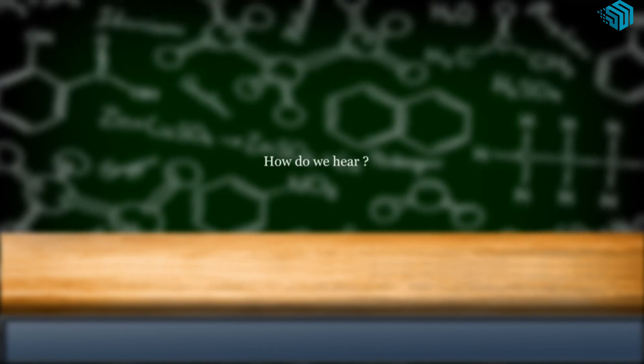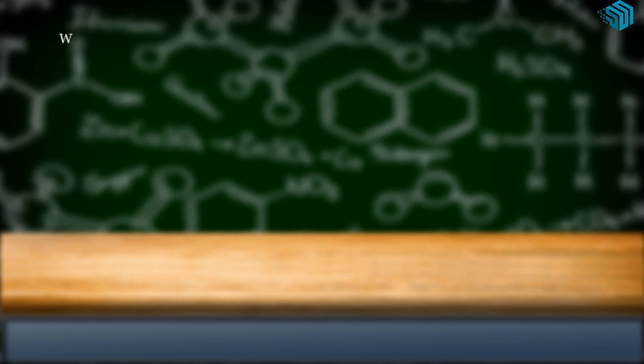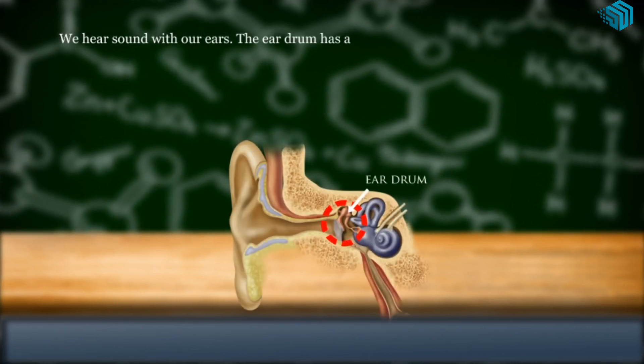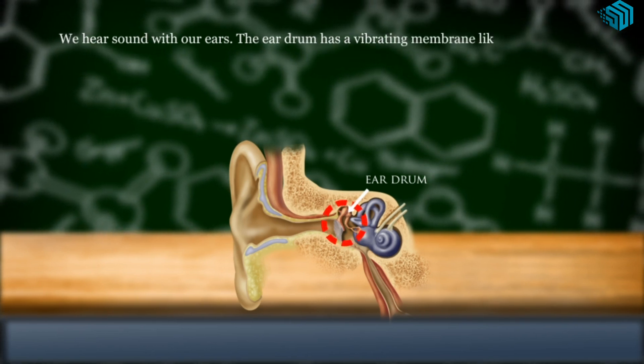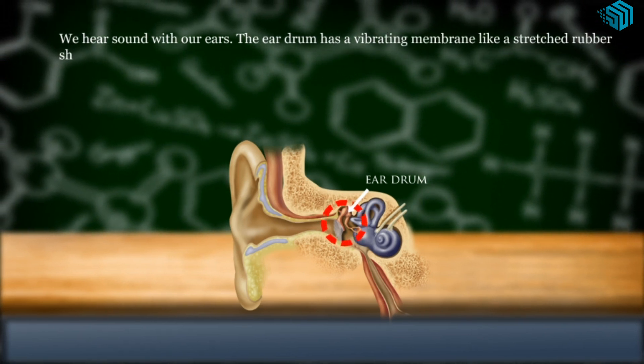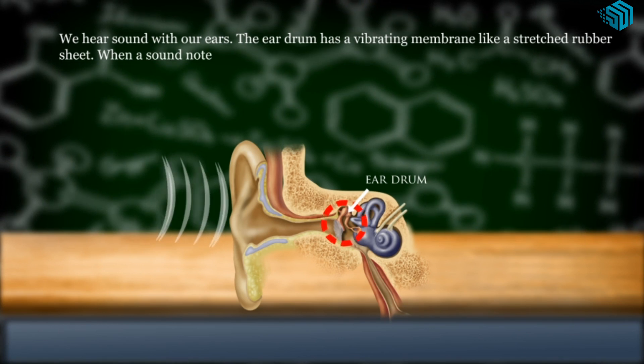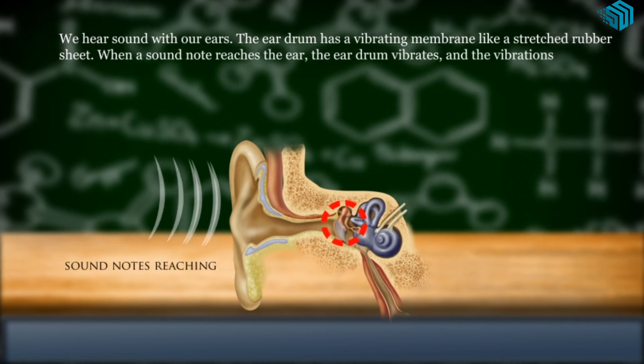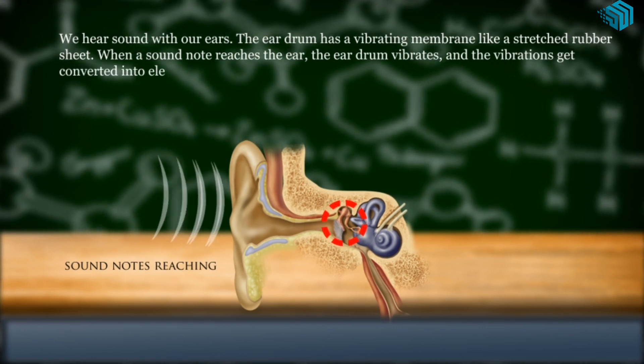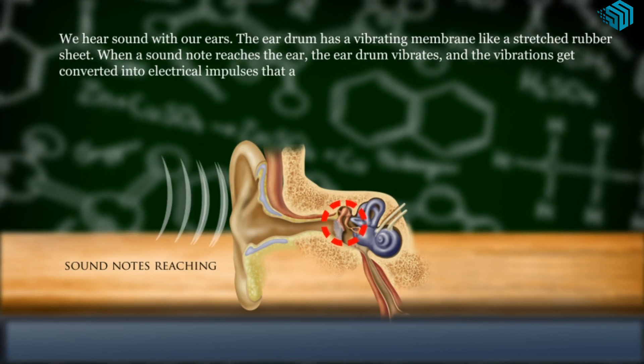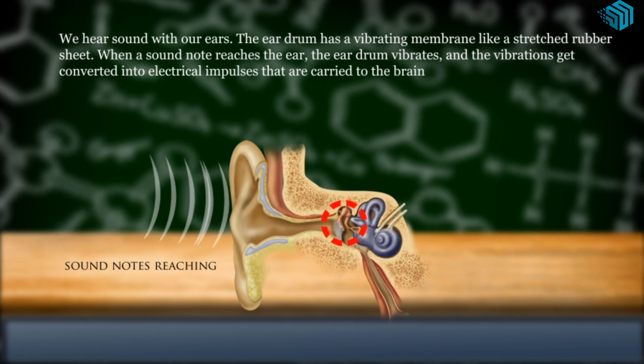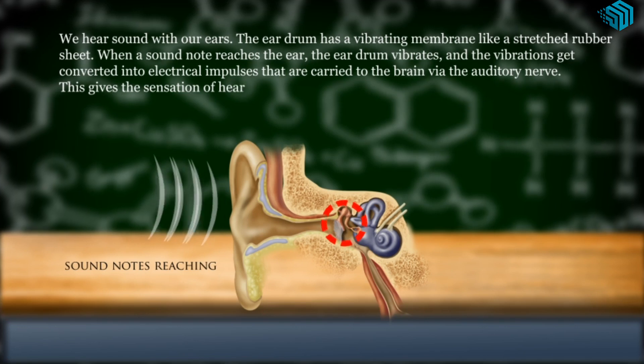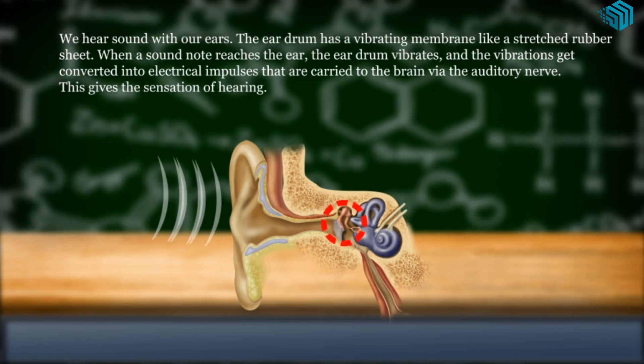How do we hear? We hear sound with our ears. The eardrum has a vibrating membrane like a stretched rubber sheet. When a sound note reaches the ear, the eardrum vibrates and the vibrations get converted into electrical impulses that are carried to the brain via the auditory nerve. This gives the sensation of hearing.